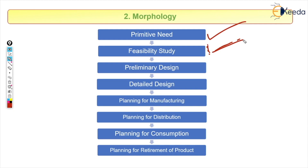After identifying the primitive need, we check the feasibility study: can we make a fan like that? The answer is yes. If yes, we move to preliminary design. For a ceiling fan, the preliminary design involves deciding the number of blades — three or four. Most commonly it is three blades, so we design it with three blades.